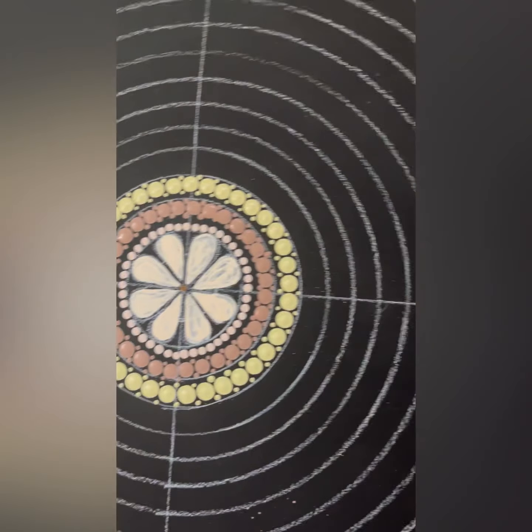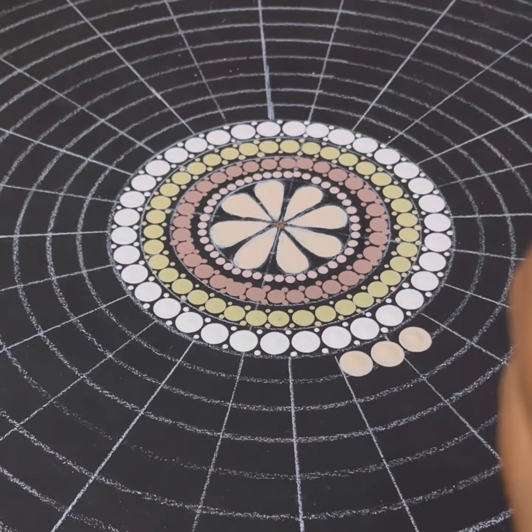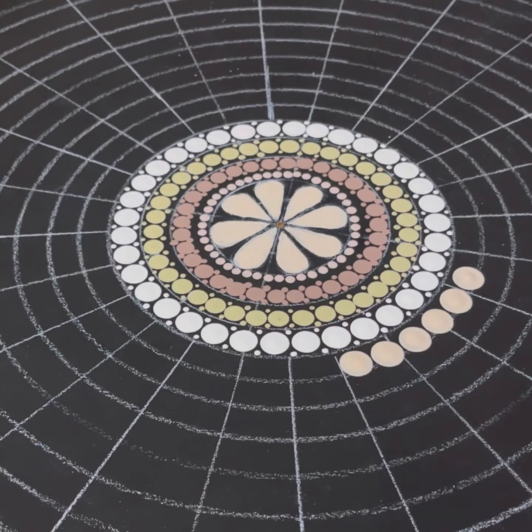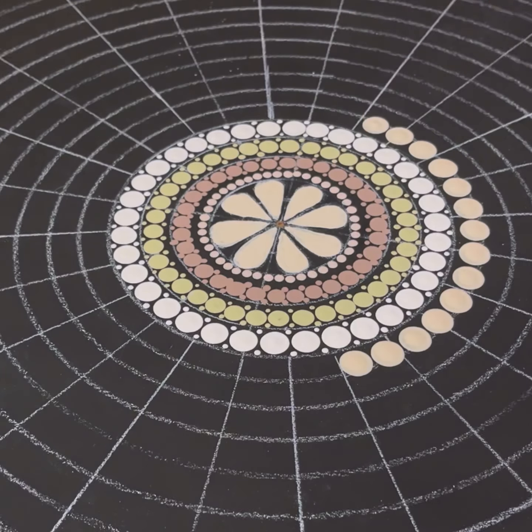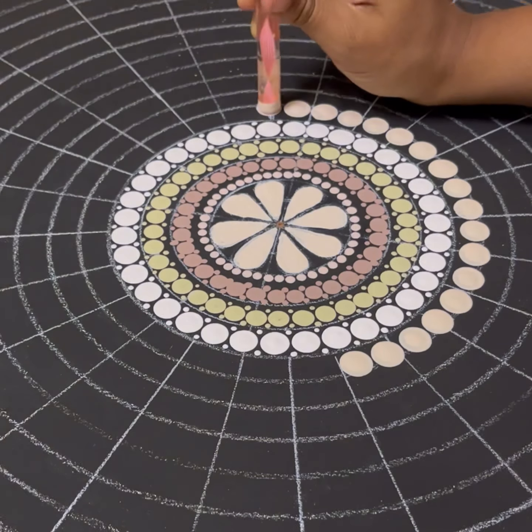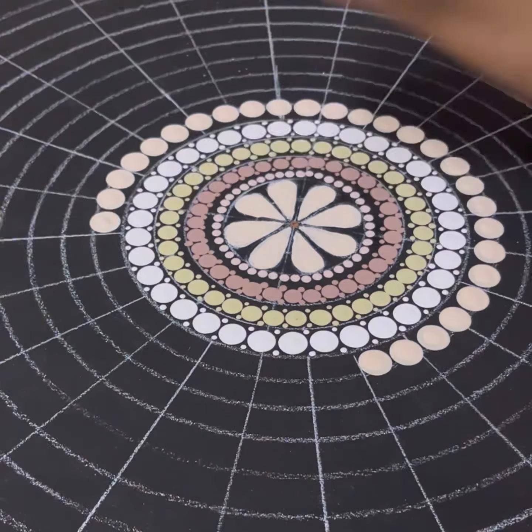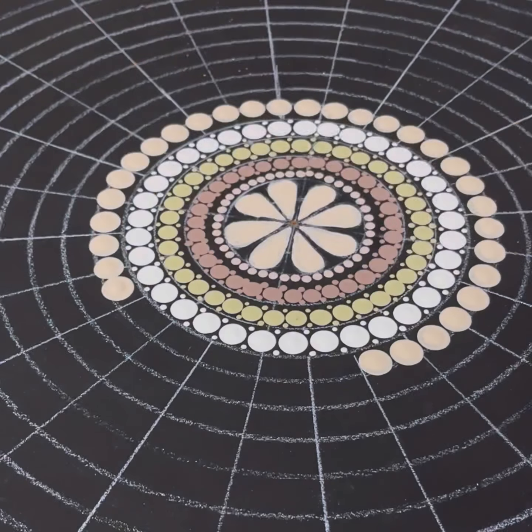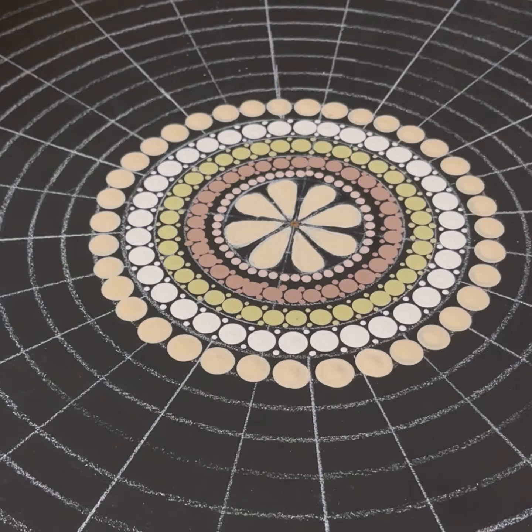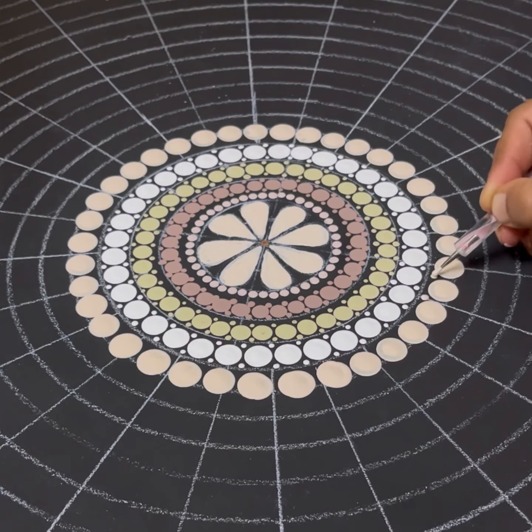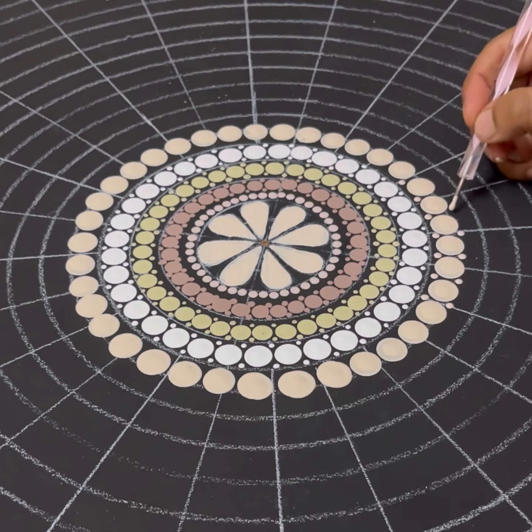So now here's the snippet of the design till now. Now adding the fifth layer using beige color and using larger mandala art tool, start making dots and repeating the same steps in the previous layers, adding details to those dots.